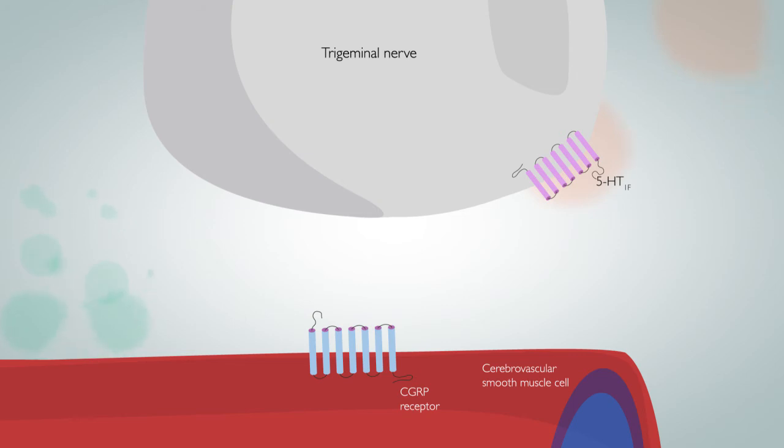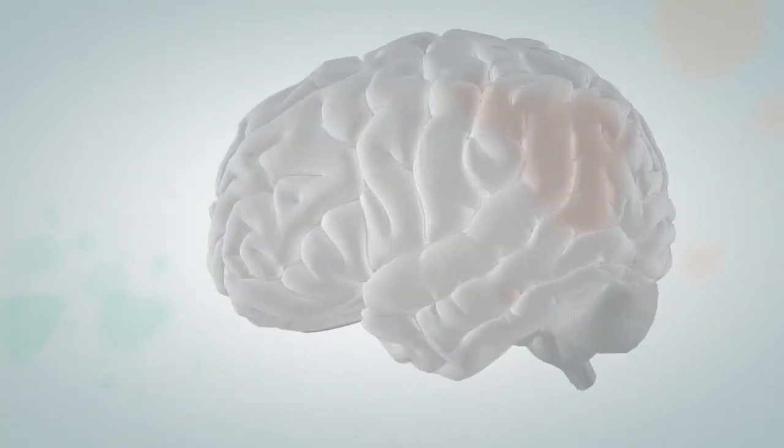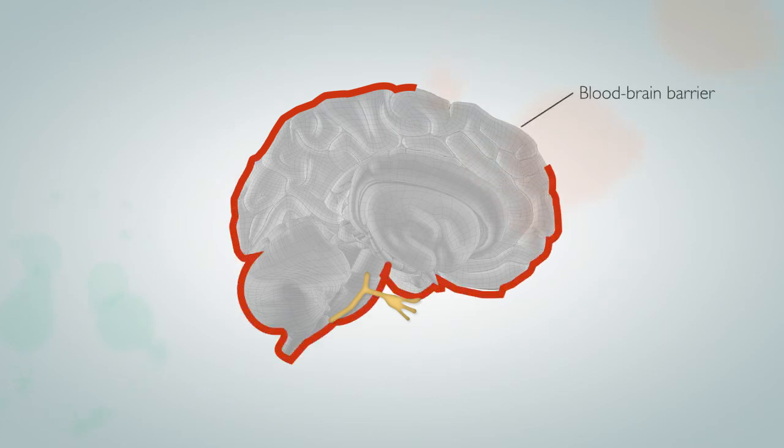5-HT1F receptor agonists are a novel drug class also called DITANS. 5-HT1F receptors are located on the trigeminal ganglion and secondary trigeminal neurons in the brainstem. DITANS have been shown to act peripherally and centrally by penetrating the blood-brain barrier.